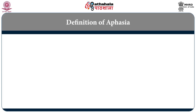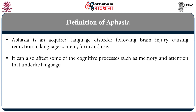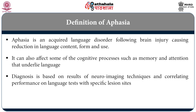Aphasia has been defined as an acquired language disorder following brain injury causing reduction in language content, language form, and language use. It can also affect some cognitive processes like memory and attention which definitely underlie language. The diagnosis of aphasia is based on neuroimaging techniques which correlate the site of lesion with diminished performance in language tests — an administered series of language tests — and the location of the lesion in the brain, which I have dealt with in another module.